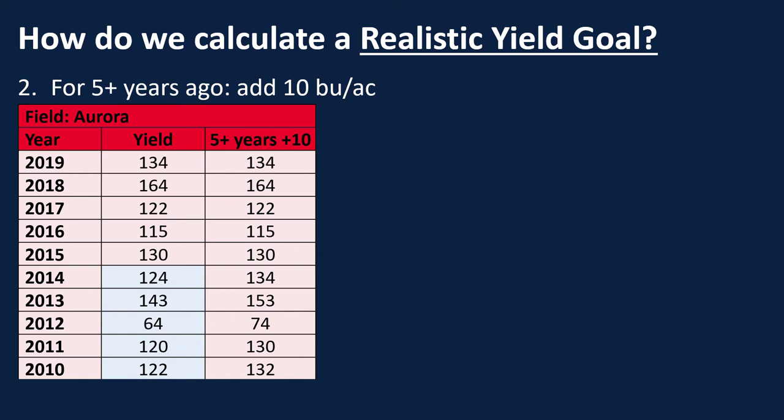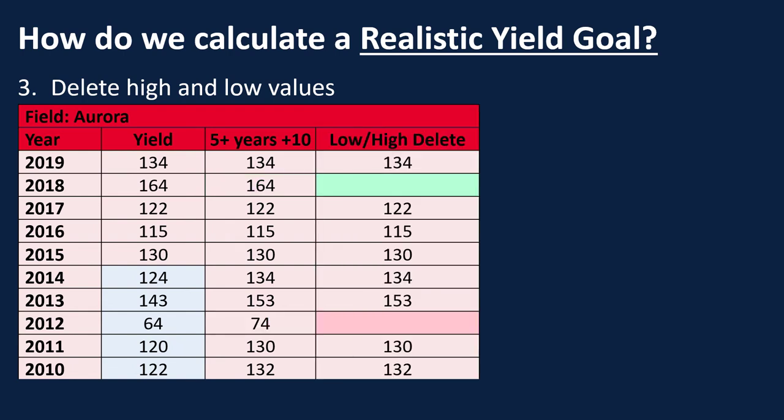Once we add those ten bushels per acre, we have our adjusted numbers. Step three is we're going to identify those high and low values. Here in 2018, we had 164 bushels per acre, which was a really good moisture year — higher average yielding than normal. Then we have a 74 in 2012, which is a drought year, below what we normally have. So we're going to take those two values and delete them.